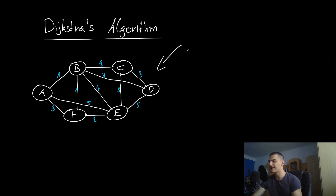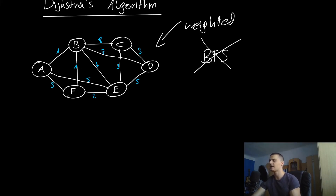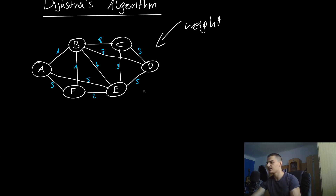We're dealing with a weighted graph, and weighted is important here because if it was not weighted we could just use a BFS — a breadth-first search — to find the shortest path from A to any other node. Without weights, finding the shortest path is simple: you look at neighbors layer by layer. But with weights, the shortest path in a BFS from A to F would just go directly to F at a cost of three, whereas going A to B to F costs one plus one, which is two — so going through B is more efficient.